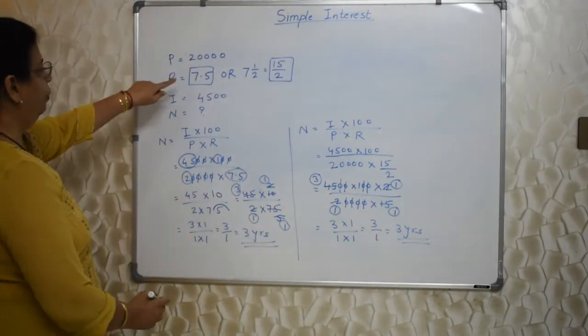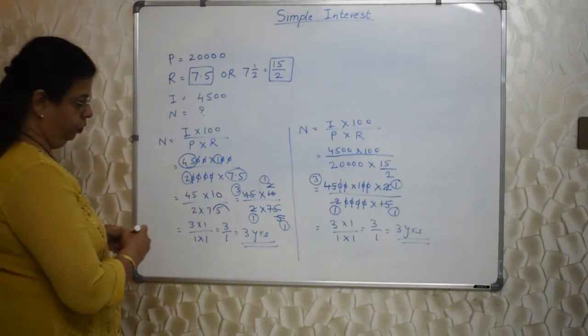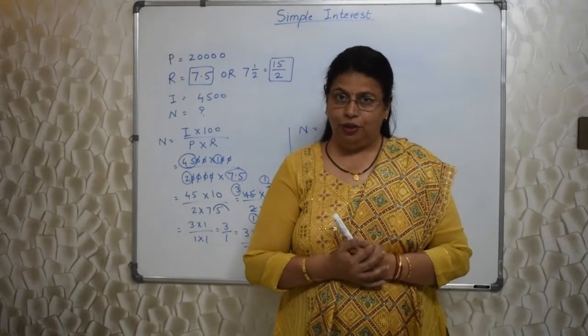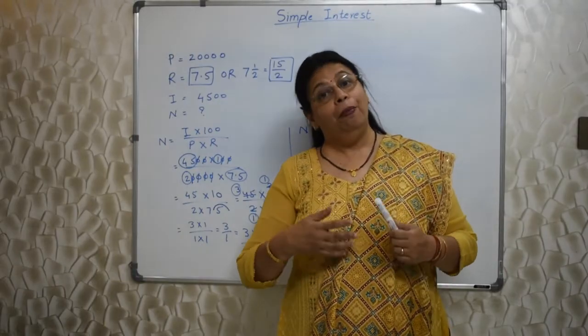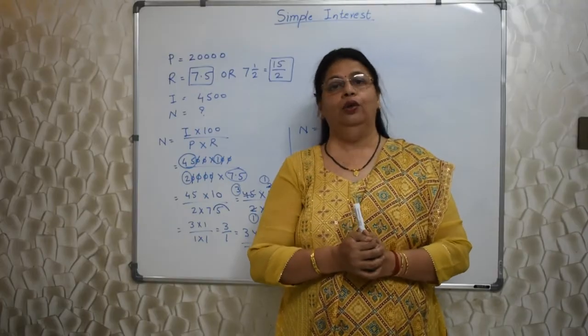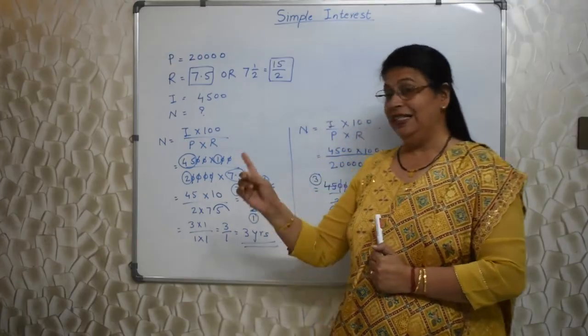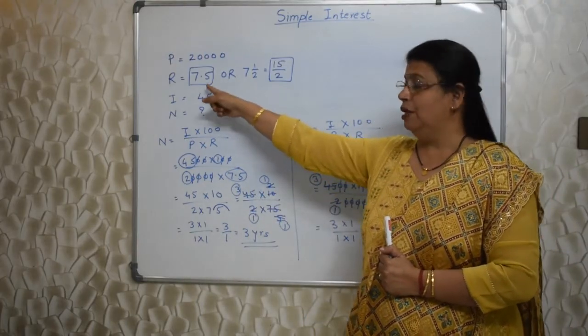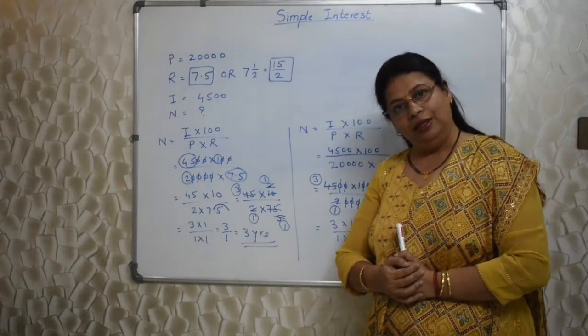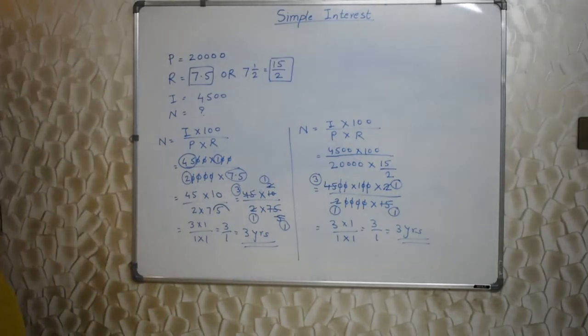Whether we do it with the help of decimal or fraction, our answer won't change. Maths is such a subject. Most of the times, I would say most of the times, you have multiple ways of arriving at answer. But every time if you do your calculations correctly, you will get the same answer. This is example of it. I am using this 7.5 and 15 upon 2, still I am getting the same answer. Okay. Next question will appear on your screen.